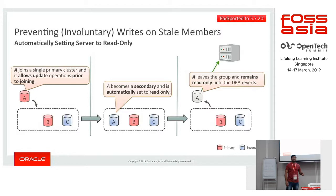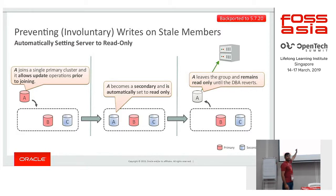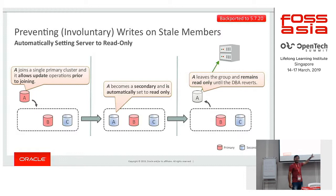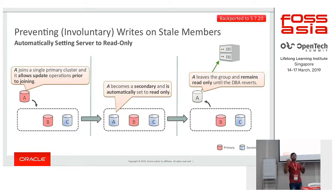In the operations part, what used to happen earlier in group replication is that a member which was part of the group in single primary mode was read-only. The moment we used to do stop group replication, that member would go offline. When it was not a part of the group, we were able to do reads and writes there, which was not good because when it tried to join back it might have extra data not supported in the group. Now when we say stop group replication, the member will remain read-only — only reads will happen, no writes. After we make changes to rectify it, it can join back to the group.